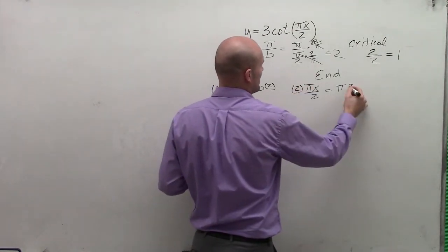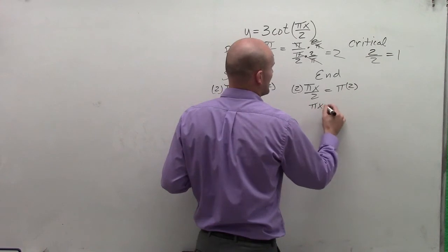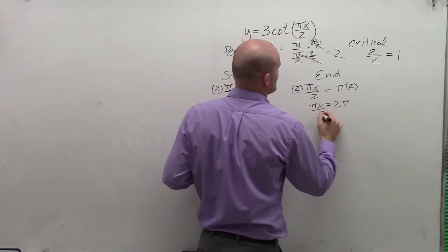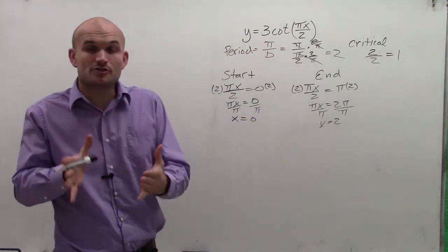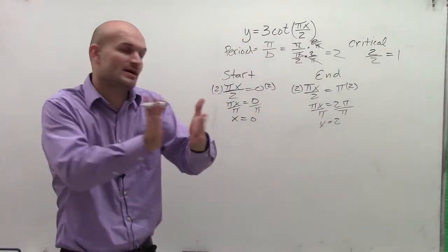Over here, do the same thing. Multiply by 2 on both sides. I have pi x equals 2 pi divided by pi, so x equals 2. Now I can say my initial period of my graph is going to be between 0 and 2.